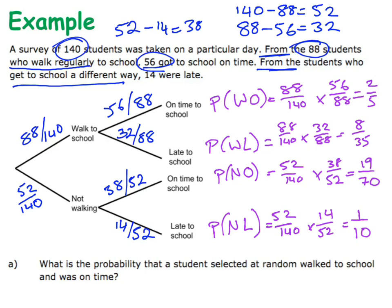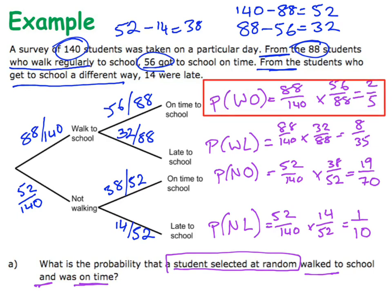So that is my tree diagram completely set up. Now I can look at the probability questions. The first one: what's the probability that a student selected at random walked to school and was on time? I'm looking for walking and being on time, which is that particular combination. So the probability they walked and were on time is 2 out of 5.